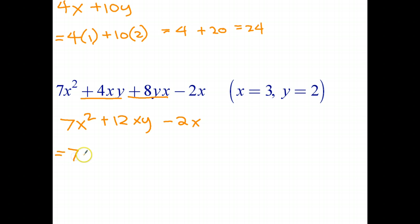Okay, now let's go ahead and substitute. 7, I'll use my brackets again. 7 times 3 squared plus 12 times x, which is 3, times y, which is 2, minus 2 times 3. Okay, let's go ahead and evaluate. 3 squared is 9. 9 times 7 is 63. 3 times 2 is 6. 12 times 6 is 72, minus 6. Okay, I can probably do this one in my head, I think. 60 plus 70 is 130. 3 plus 2 is 5. So 135, 135 takes 6 is 129. So I'm pretty confident that I've done that correctly.